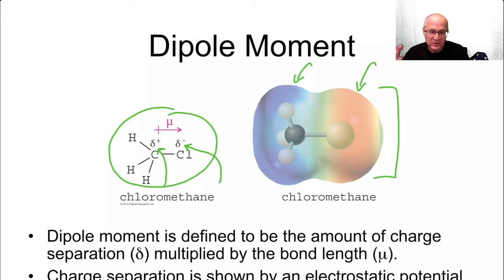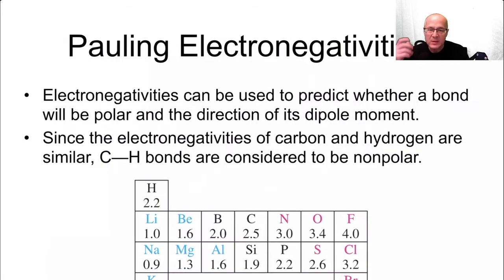Now what's causing this separation of charges, this delta negative delta positive? Pauling electronegativity. Now electronegativity is a very simple concept. It's essentially an element or an atom's attraction to its own electrons or to the electrons that are in its shells, including the bond electrons.